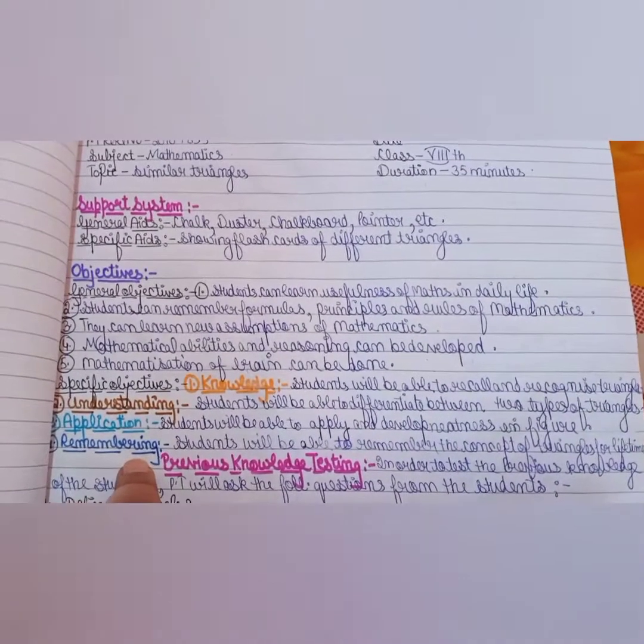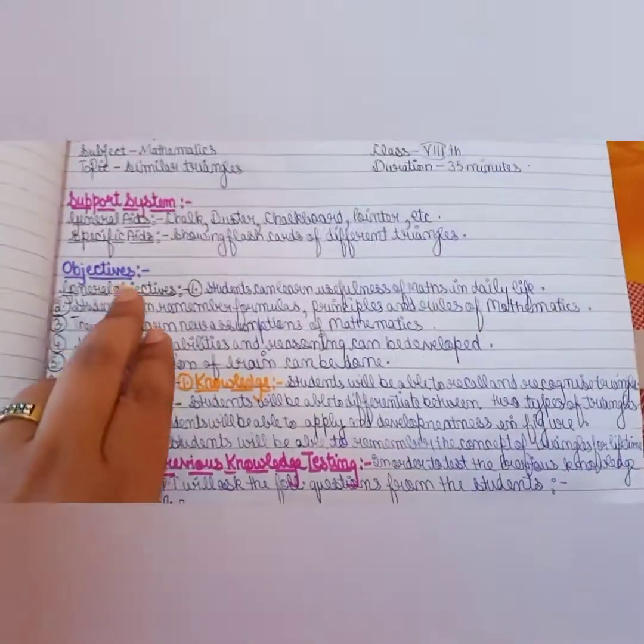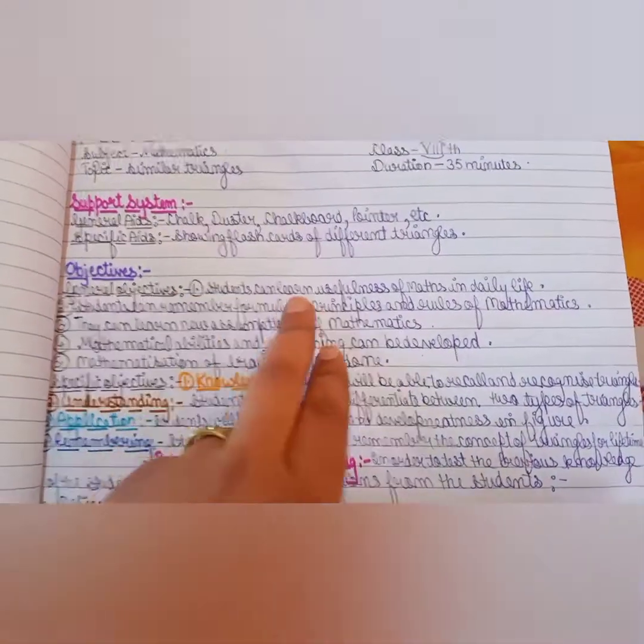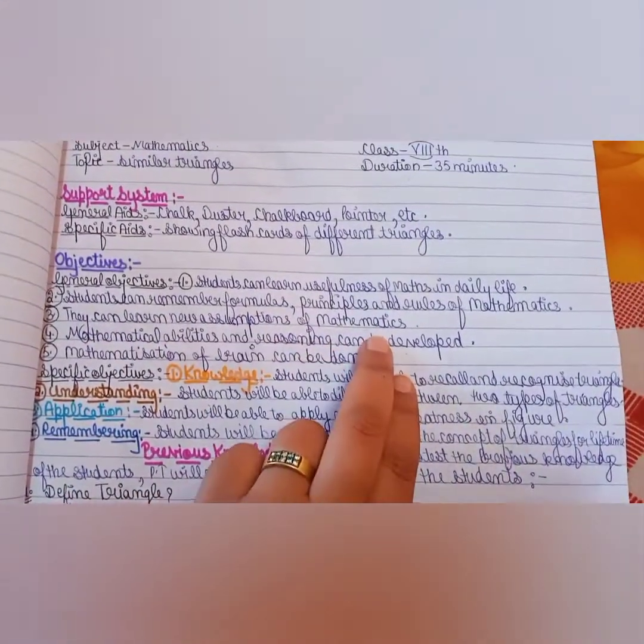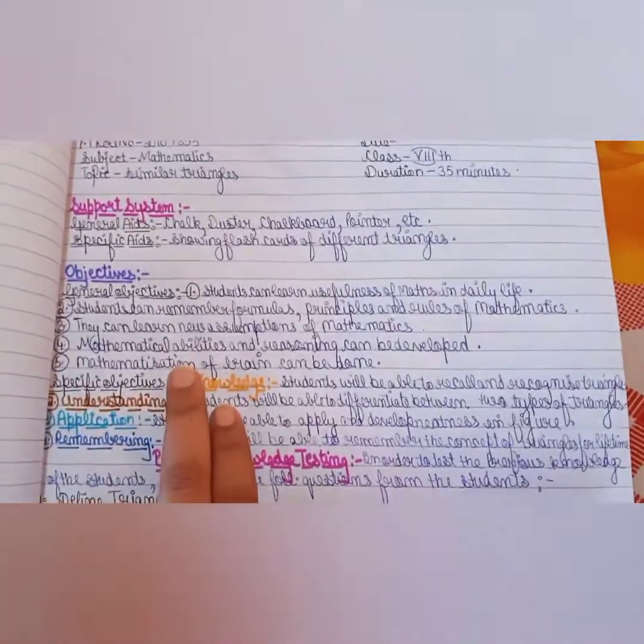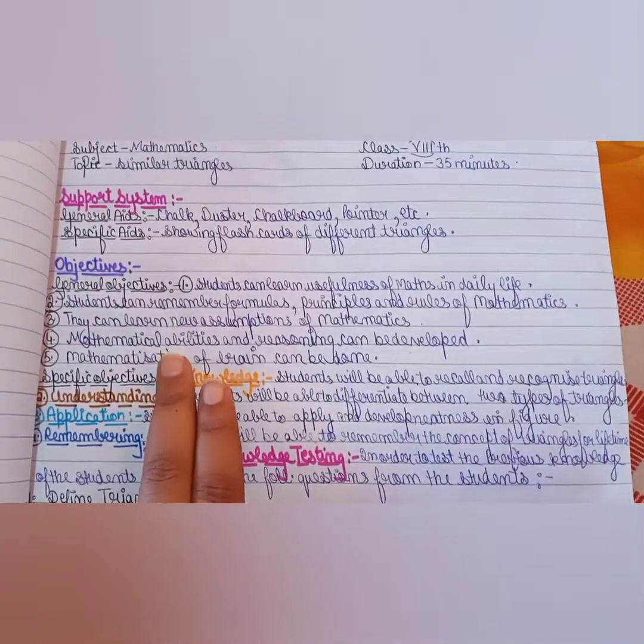This is Blooms Taxonomy that you have already read. In General Objectives, students can learn usefulness of Maths in daily life. Students can remember the formulas, principles, and rules of Mathematics, and so on.